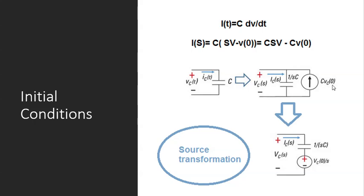Sometimes you might say: I have a circuit where everything is in series, and I really don't want to have an extra parallel current source — it's going to be a hassle to analyze with nodal analysis or loop analysis. No problem. We can also model it another way. With a simple source transformation, we can model a capacitor with initial condition with a capacitor without initial condition in series with a voltage source.